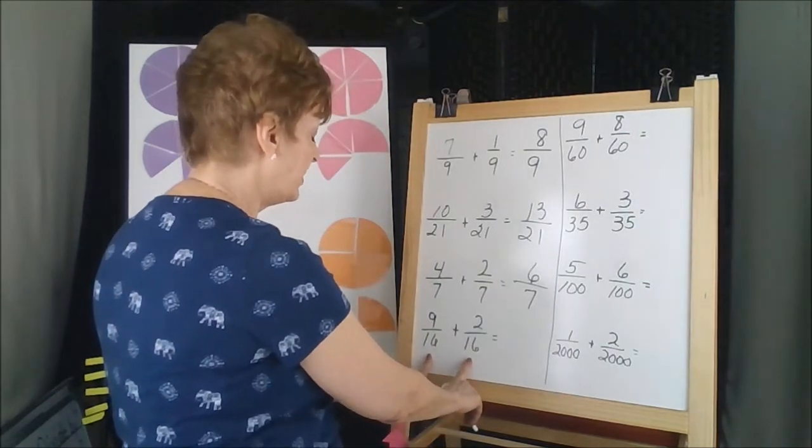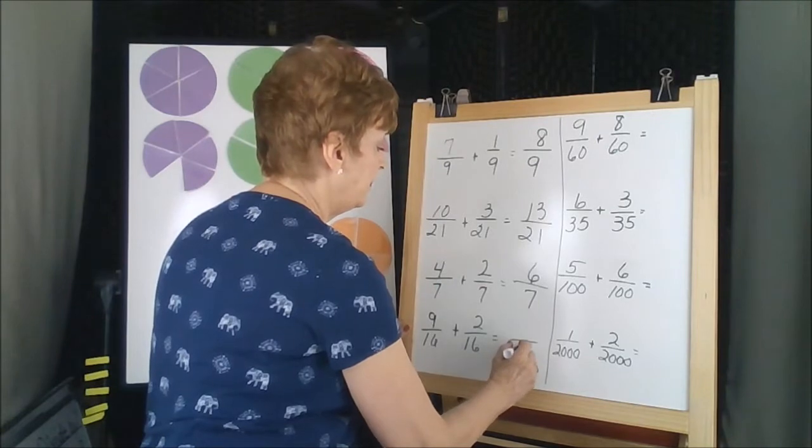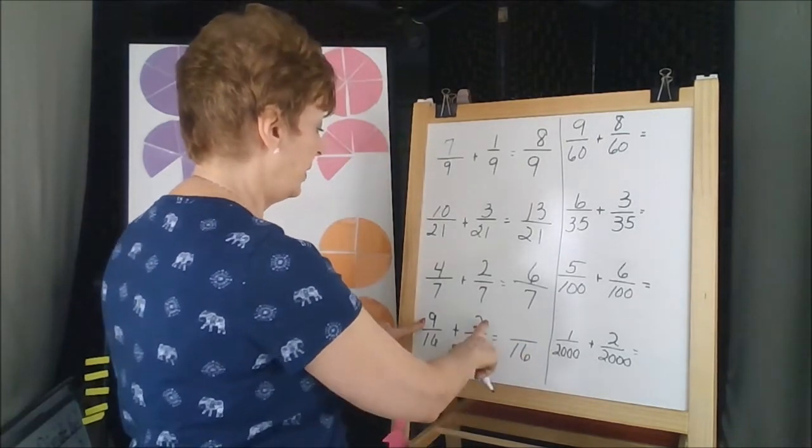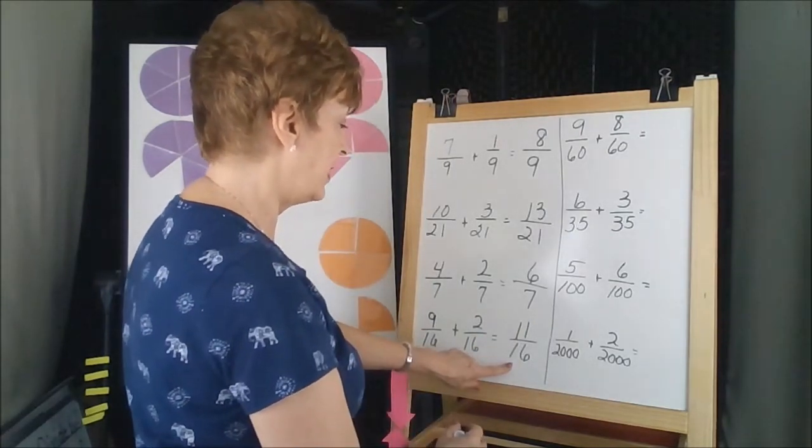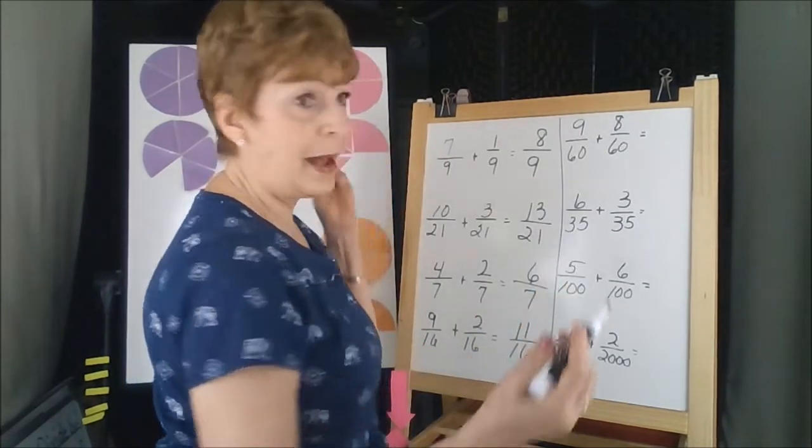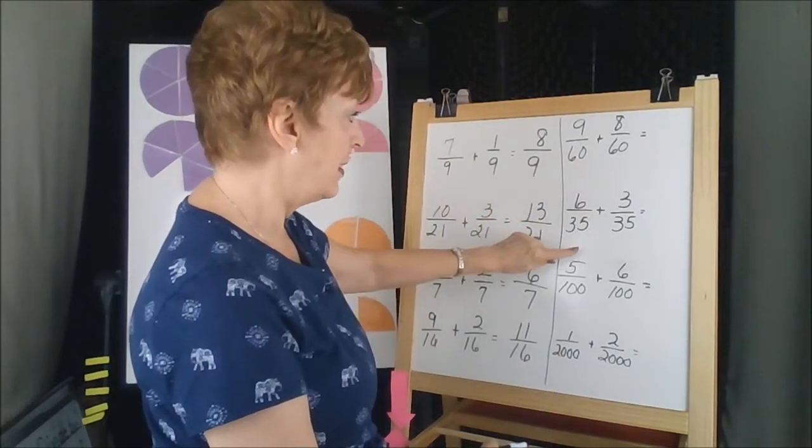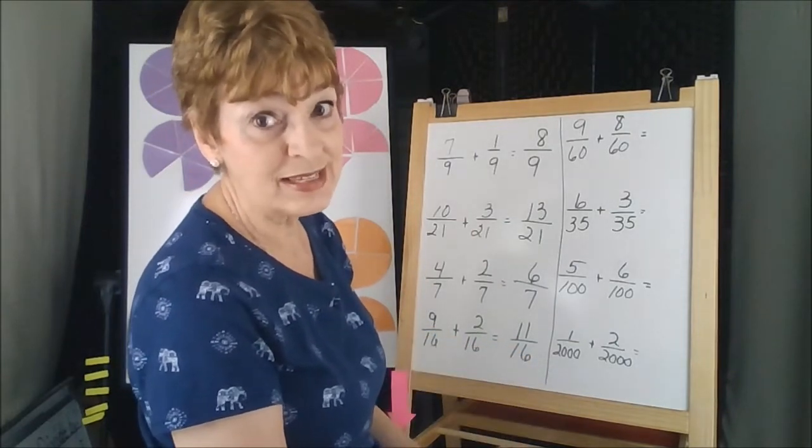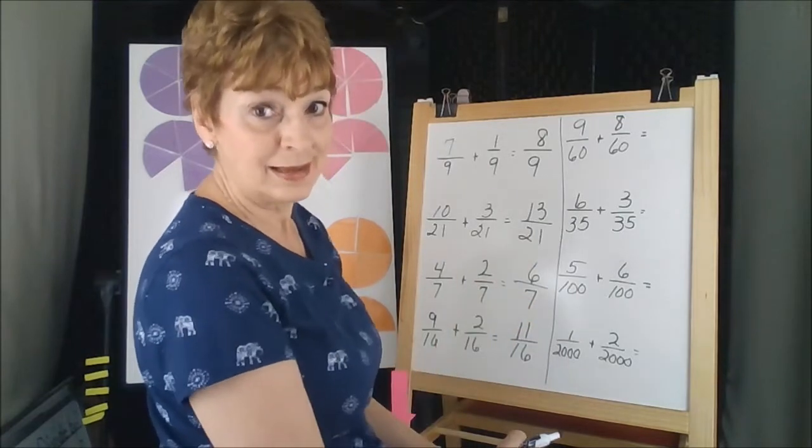Are these numbers the same? Yes. Copy them. The size of the piece is the same. 9 plus 2 is 11. 11 sixteenths is our answer. What happens when the denominator gets big, like 60s and 35s and 2000s? As long as they're the same, you can add the top number and keep the bottom.